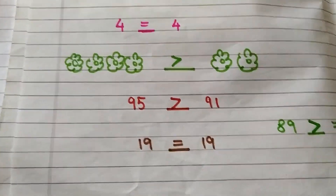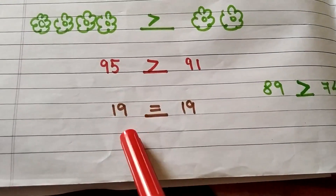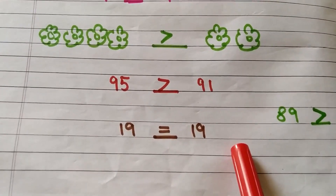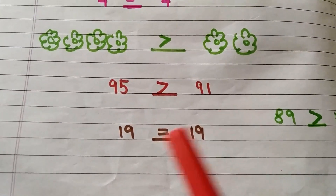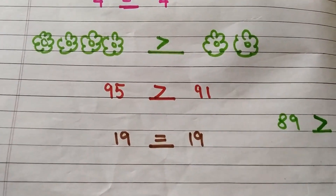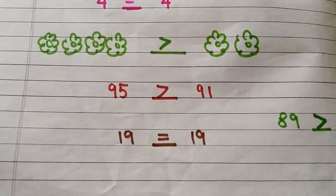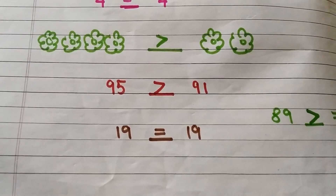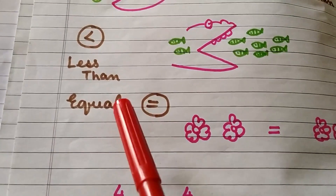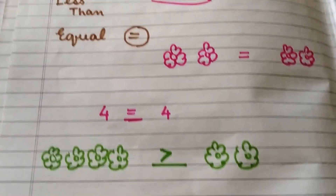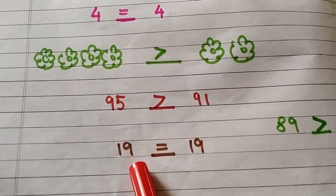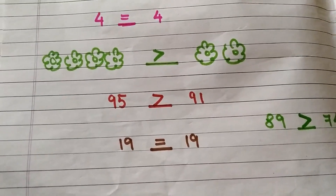Now we have 19 on one side and 19 on the other side. Can you see both the numbers are same? And when the numbers are same, which sign do you put? You put an equal to sign because these two numbers are same.